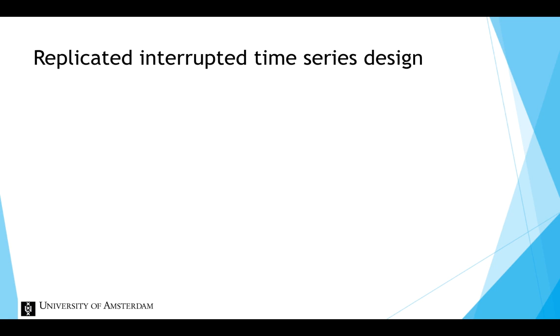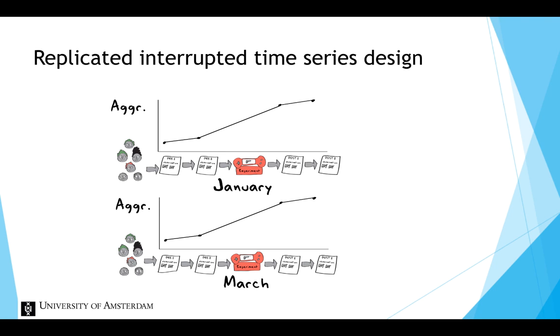The design could also be implemented by exposing a second group to the same intervention, but at a different time. If the effect also shows if the participants are exposed to the intervention two months later, we can be sure it was actually caused by the violent video game.